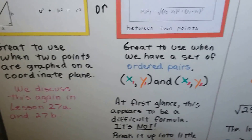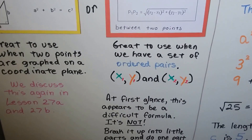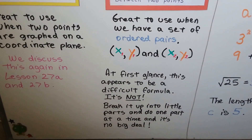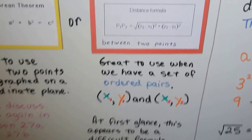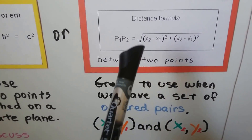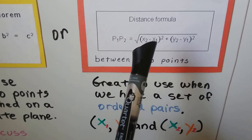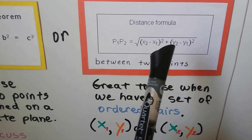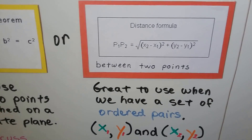At first glance, this formula appears to be very difficult, but it's not. If we break it up into little parts and do one part at a time, it's no big deal. It's just saying to take the second x and subtract the first x and then find the square of that, and then take the second y and subtract the first y and square that.